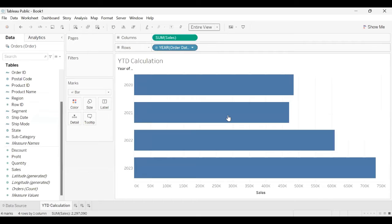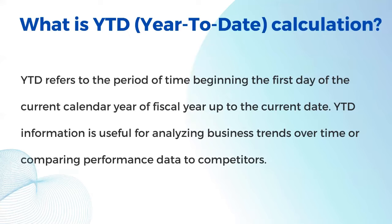As per the requirement, I need to do the YTD calculation. Year to date — what exactly does YTD mean? YTD refers to the period of time beginning from the first day of the current calendar year or fiscal year up to the current date. YTD information is useful for analyzing business trends over time or comparing performance data to competitors. It is mainly used for comparison from the beginning of the current year till today's date.